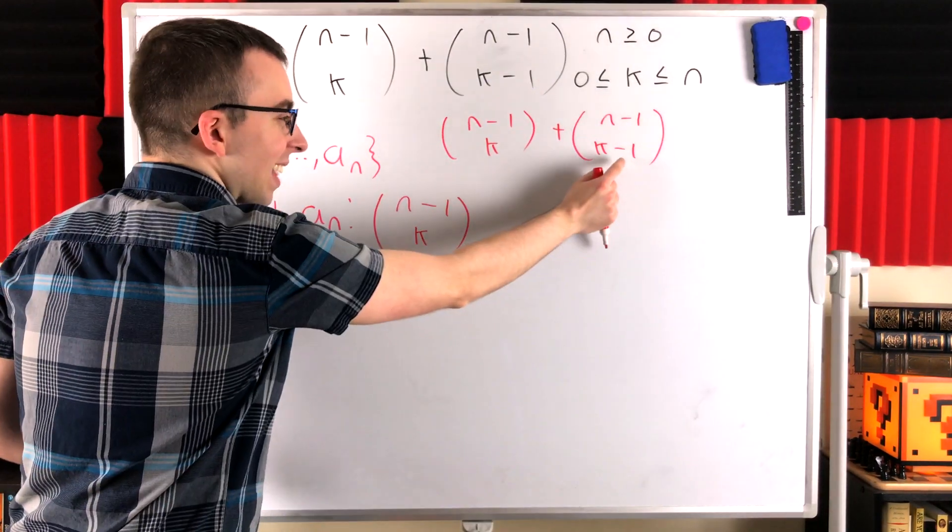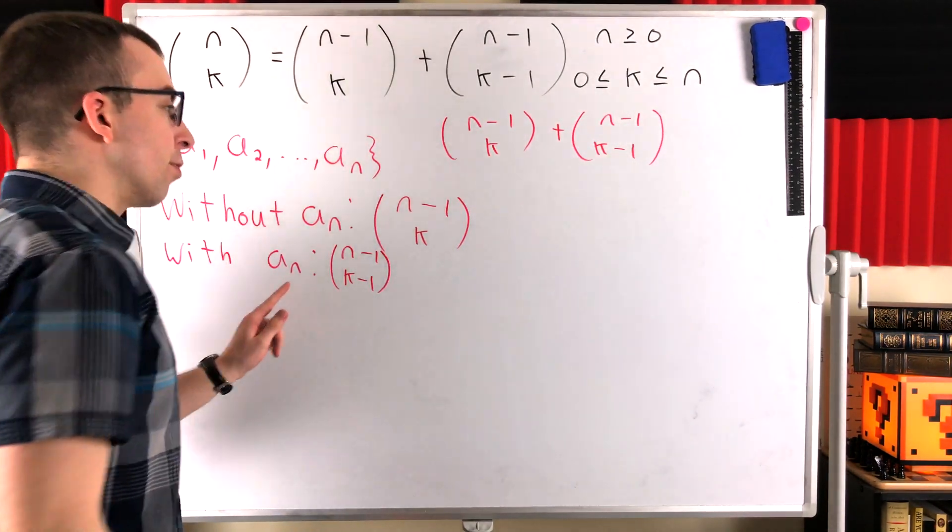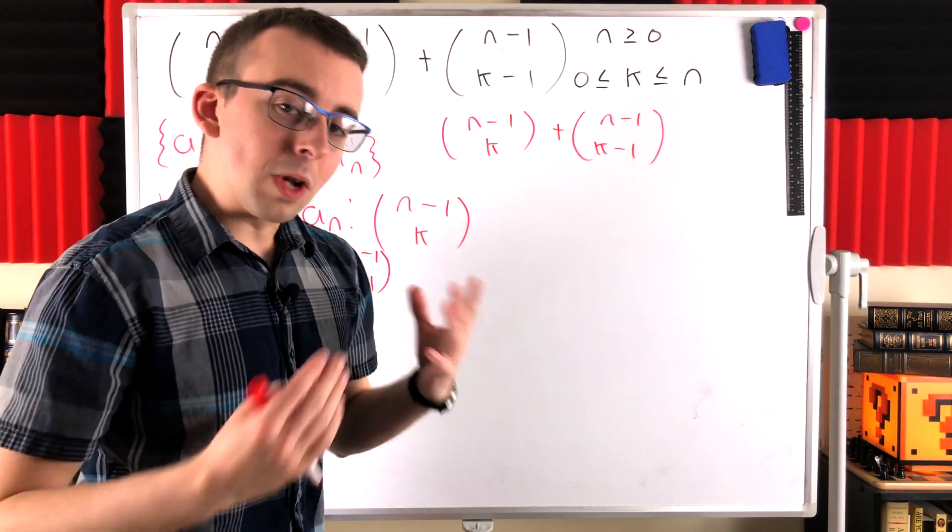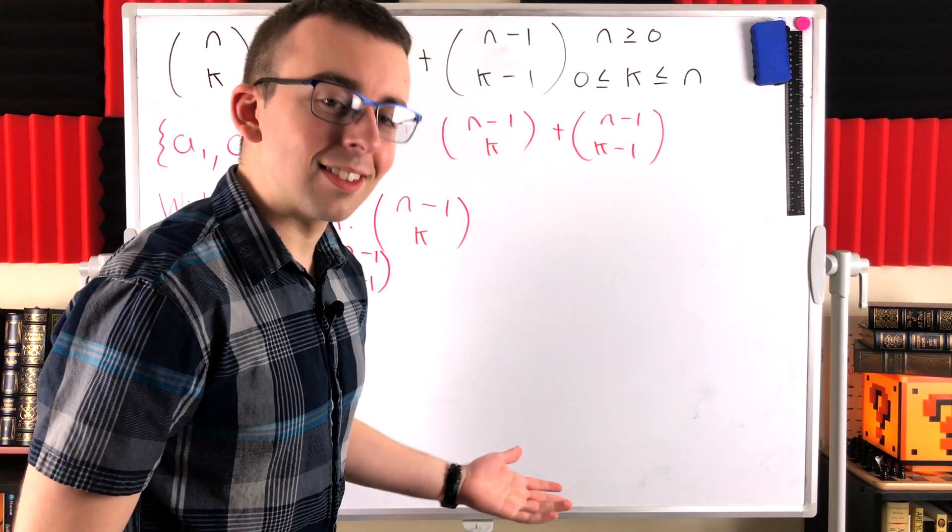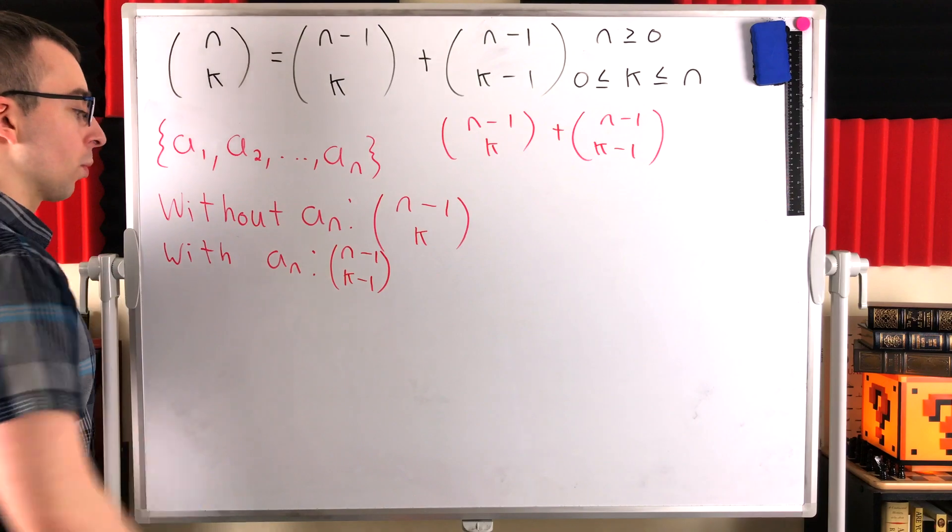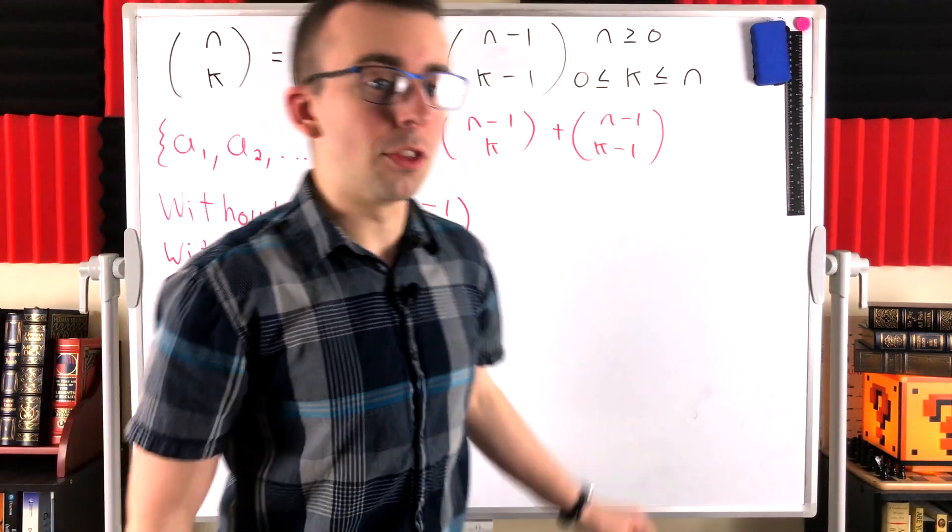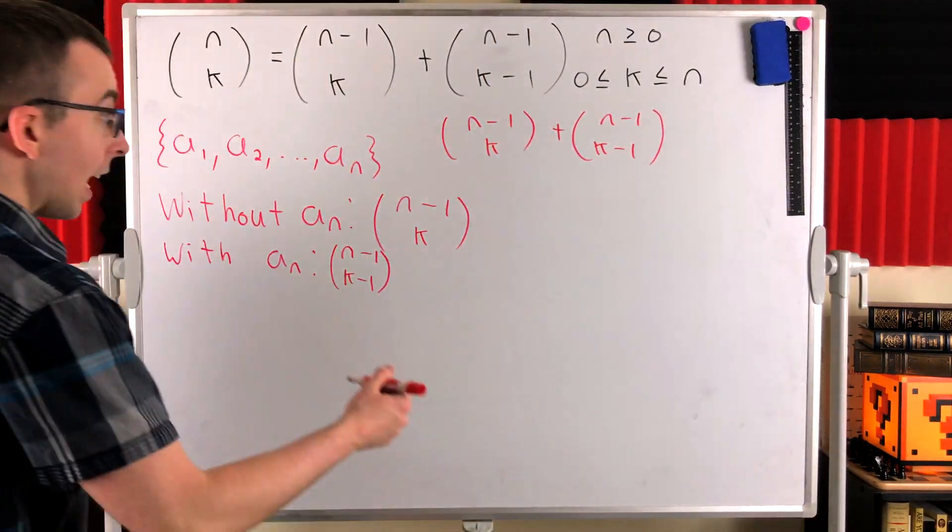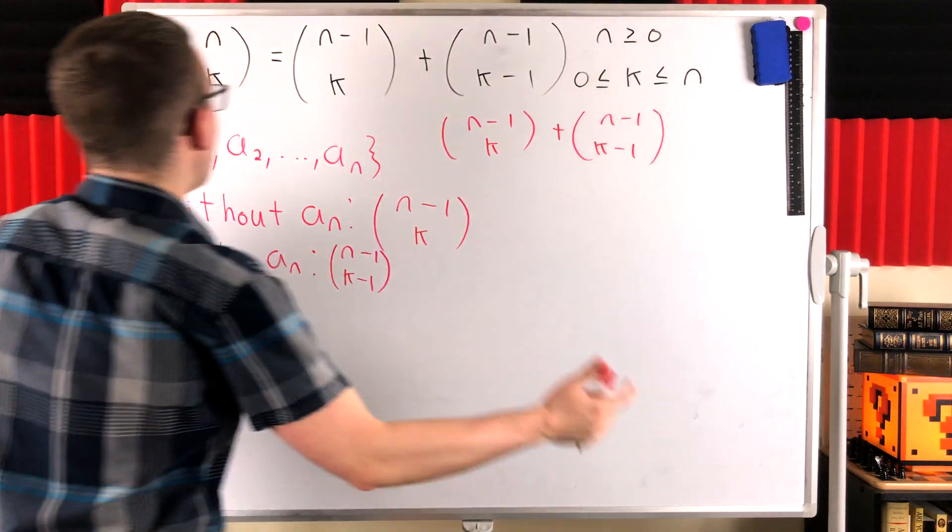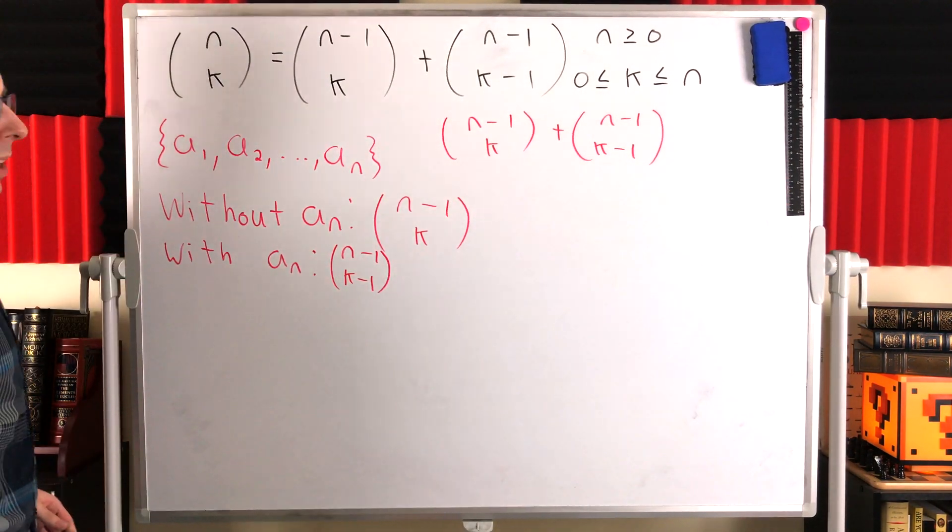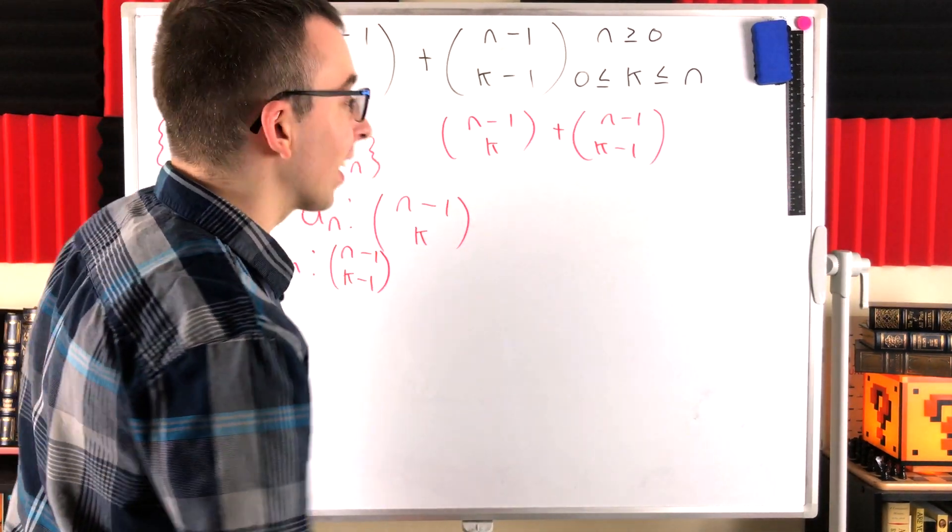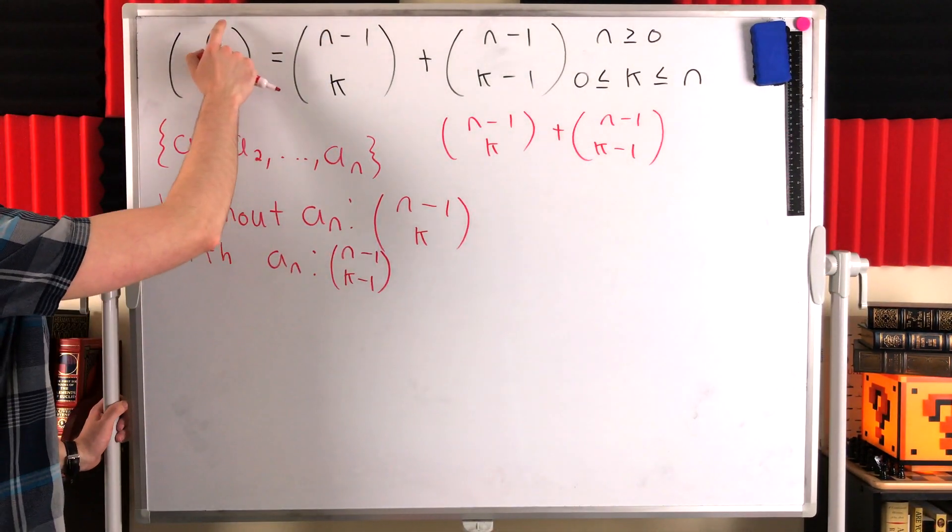And again, we've got that k minus 1 there because we have fixed this count to count the collections that do include a_n. So we only have k minus 1 choices left to make. We've already determined we're going to include a_n in those collections. And so that's just another way that we could count the number of ways of choosing k objects from a collection of n objects. And that proves the equality.